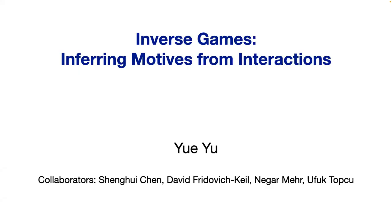His research interests are at the intersection of optimization, game theory, control theory, and machine learning. In particular, he develops numerical solvers to enable real-time decision-making in autonomy, data-driven control, and especially systems with uncertainty about the dynamics. Today's talk is about multi-agent interactions, titled 'Inverse Games: Inferring Motives from Interactions.' This is a line of research we have heard about during this series, and I'm very excited to hear more about it.